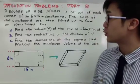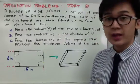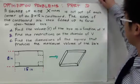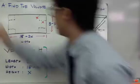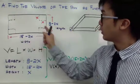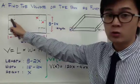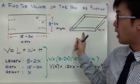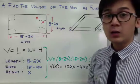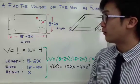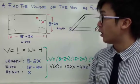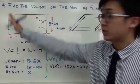To answer the first question — finding the volume of the box as a function of x — we need to construct our equation for V. We folded the cardboard at the corner, cut it out to create an open top box, and by measuring the length, width, and height, we'll be able to find the formula for its volume.